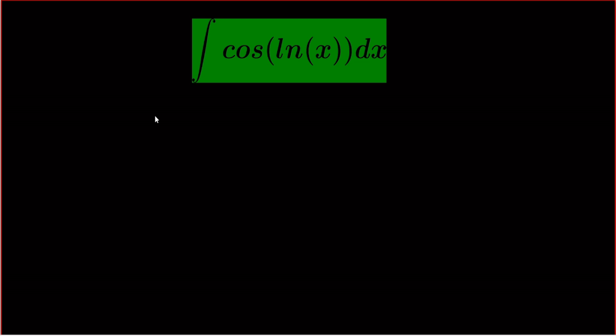Hello everyone, I'm back with another problem. Today we are going to solve the integration of cos(ln x). I'm going to use integration by parts to solve this question. Since we need two functions multiplied together but here we have only cos(ln x), I'm going to write it as the integration of x to the power 0 times cos(ln x) dx.